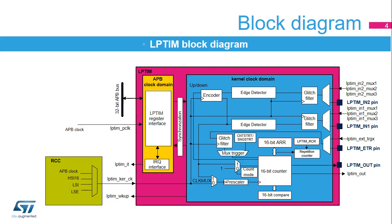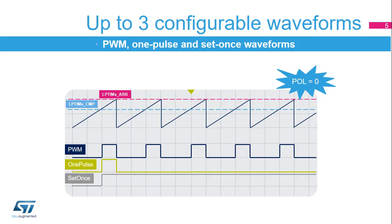The low-power timer features a repetition counter, which allows adjustment of the counter rollover. It also features an encoder mode function that can be used to interface with incremental quadrature encoder sensors using the peripheral's LP-TIM-IN1 MUX and LP-TIM-IN2 MUX inputs. Both inputs feature glitch filtering circuitry. The LP-TIM-CMP and LP-TIM-ARR registers, in conjunction with the WAVE bitfield from LP-TIM-CFGR and SNG-STRT from LP-TIM-CR, are used to control the output waveform.